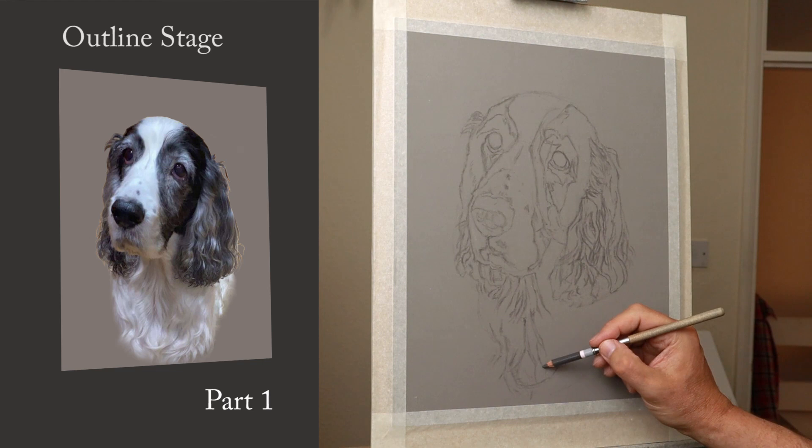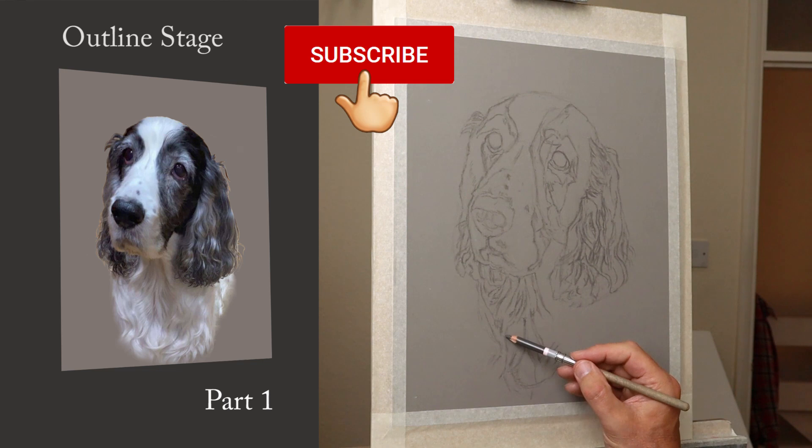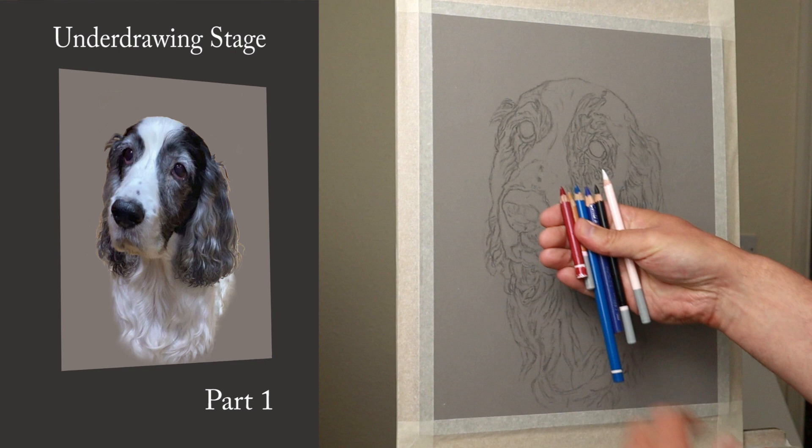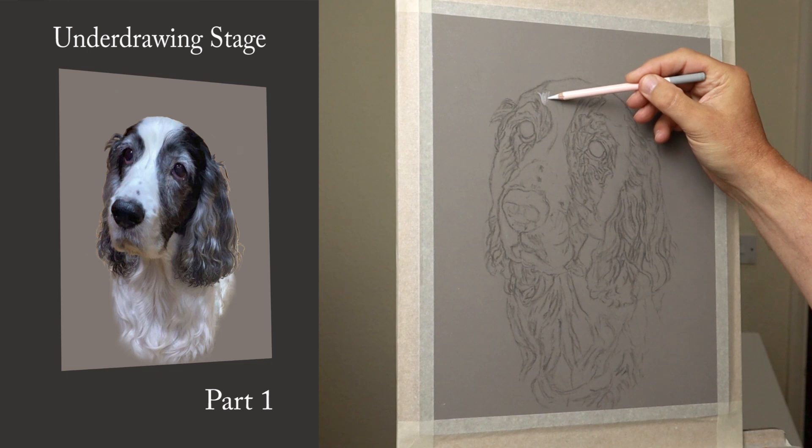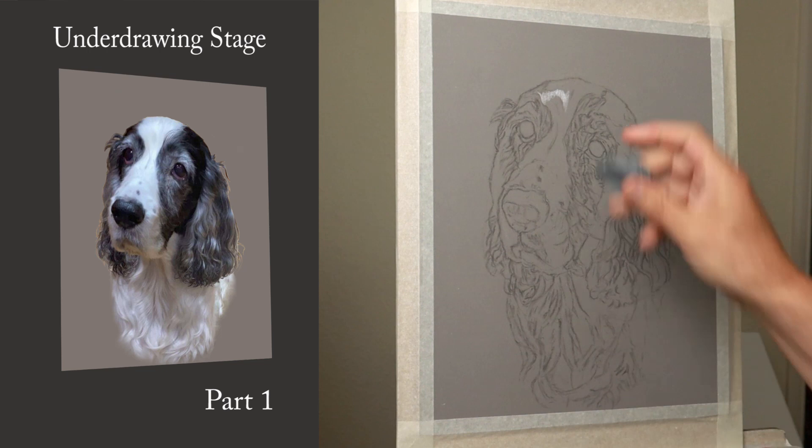If you're enjoying this video, why not subscribe — it's absolutely free and you're sure not to miss any of my future videos. So here are the colours I'll be using for the underdrawing, keeping it really simple: just one red, two blues, yellow ochre, white and black. I'll be introducing grey 708 as well as we go along and a few other colours.